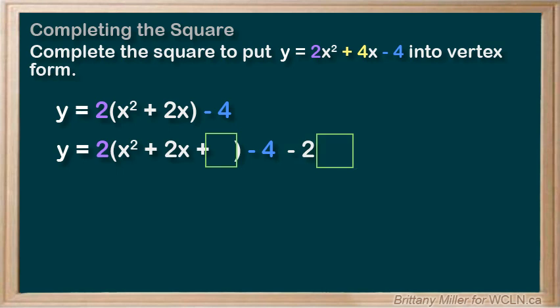Now we just do it like normal, ignoring the number out front. That means that b is 2. So b divided by 2 squared equals 2 divided by 2 squared, which is 1. Let's put that 1 in our boxes.